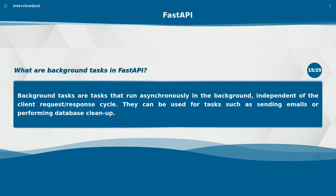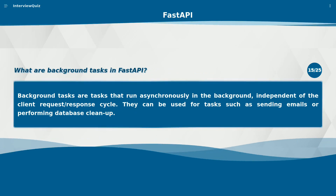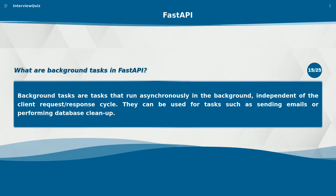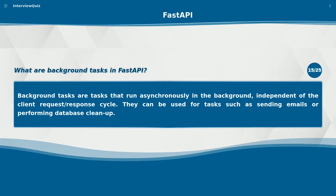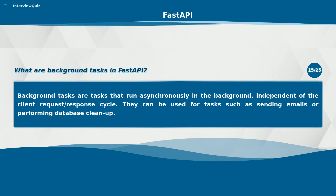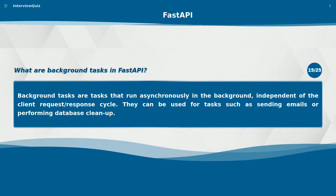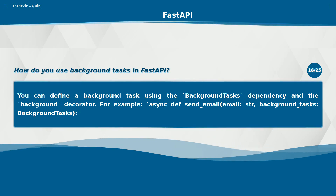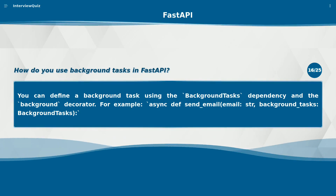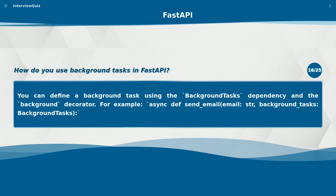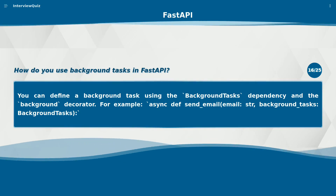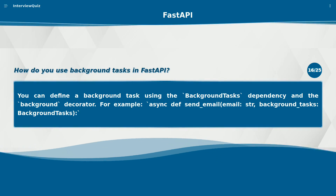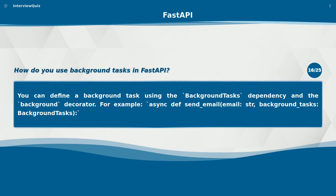What are background tasks in FastAPI? Background tasks are tasks that run asynchronously in the background, independent of the client request-response cycle. They can be used for tasks such as sending emails or performing database cleanup. You can define a background task using the BackgroundTasks dependency, for example: async def send_email(email: str, background_tasks: BackgroundTasks).